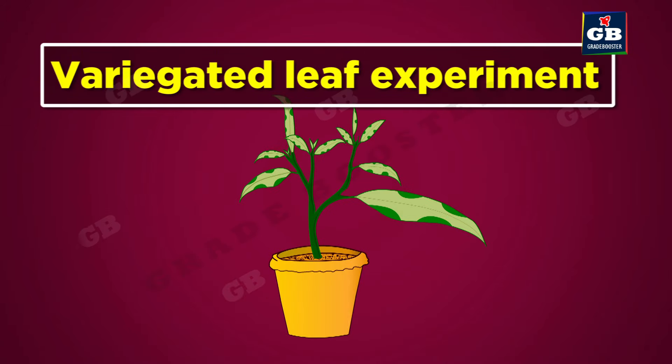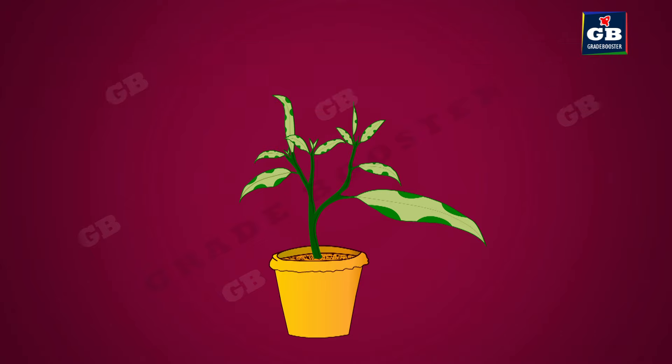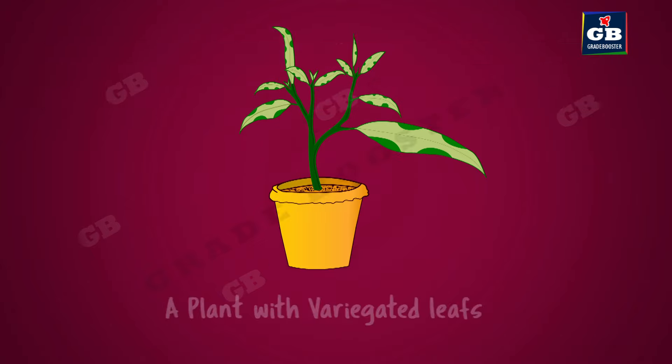With the help of a variegated leaf experiment, we can prove that chlorophyll is essential for photosynthesis. To do this experiment, we need a potted plant with variegated leaves.